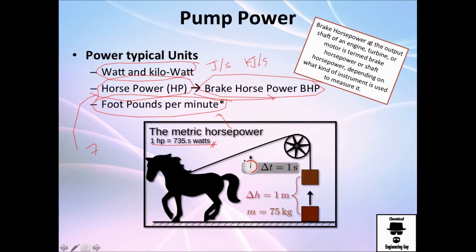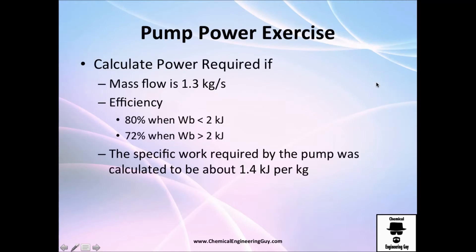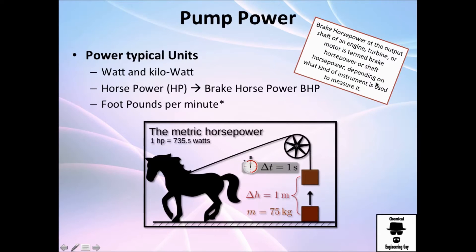Brake horsepower refers to the power at the output shaft of an engine, turbine, or motor. It's essentially the same as horsepower but measured at a specific mechanical component such as a turbine, motor, or shaft. Before the exercise, let me show you why we say horsepower.